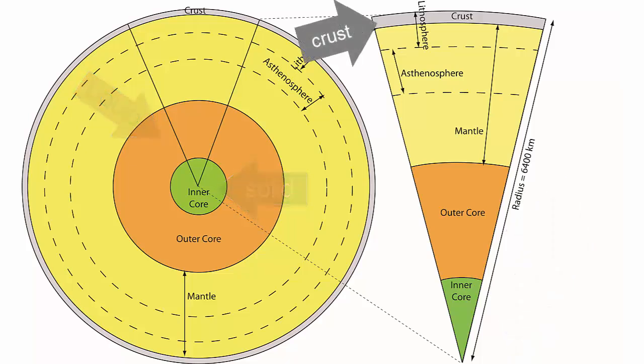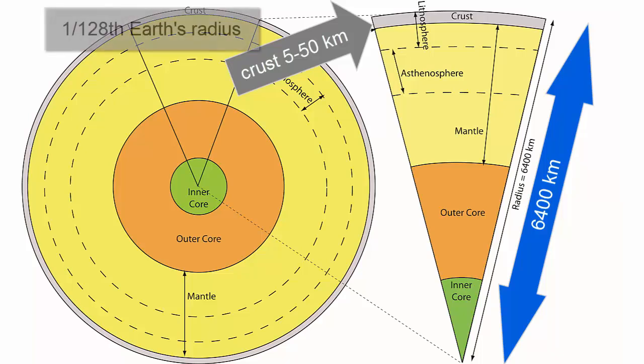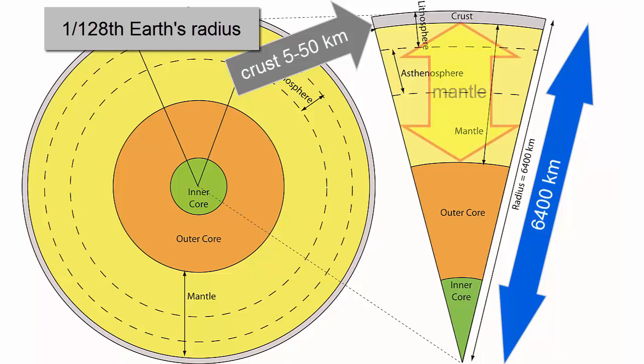Now, let's go out to the crust, which is so thin that it would be impossible to see it in any whole Earth drawing shown to scale. So in all cases, we have to exaggerate it. The Earth has a radius of about 6,400 kilometers. The crust is at most 50 kilometers thick — at most 1/128th of the radius of the Earth. The rest of the Earth, most of it in fact, is mantle.